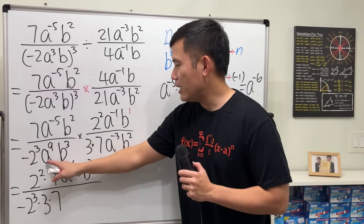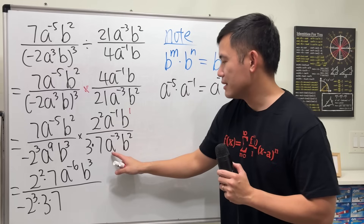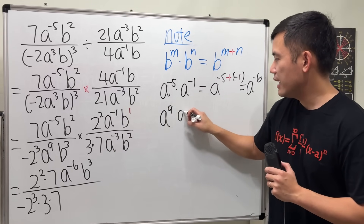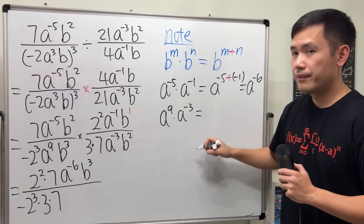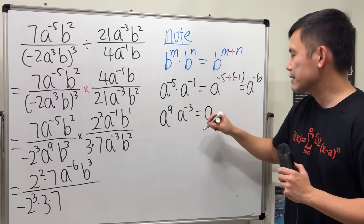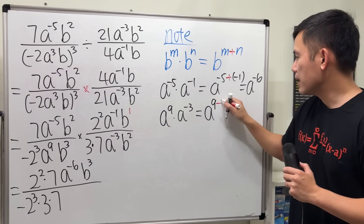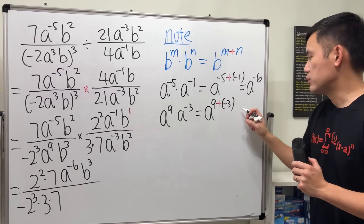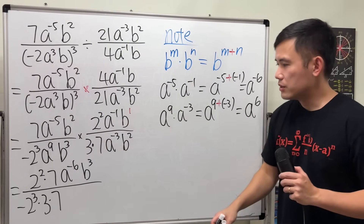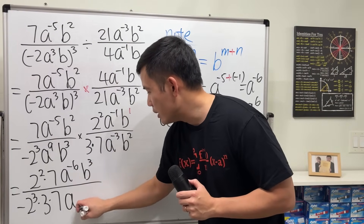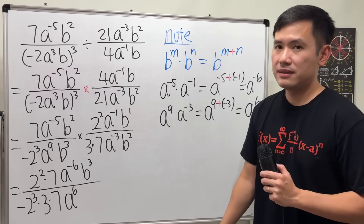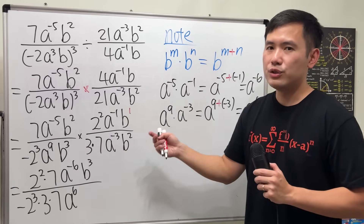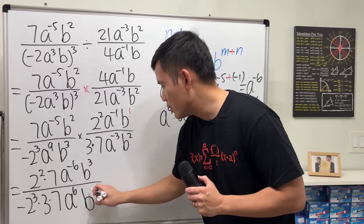Next up, we have a to the 9 times a to the negative 3, because they are both on the bottom. Let's have a look: a to the 9 times a to the negative 3 — keep the base a, add the exponents: 9 plus negative 3 is like 9 minus 3, which is 6. So that gives us a to the positive 6. And b to the third times b squared — add 3 and 2 together — that will be b to the 5th.